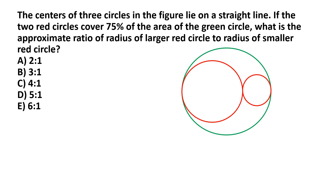Let's start by naming the centers in this figure: P for the larger red circle, C for the green circle, and Q for the smaller red circle. These circles are touching each other, so let's name the points of touching as R, S, and T.